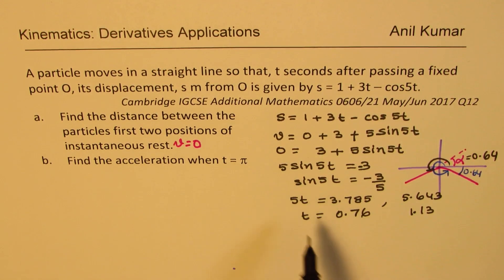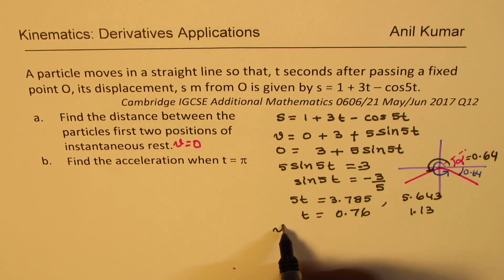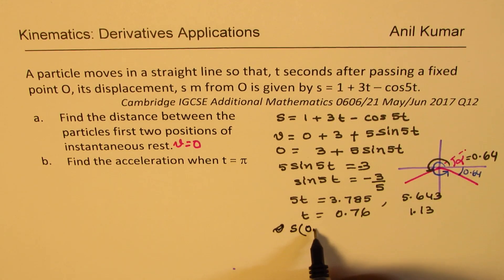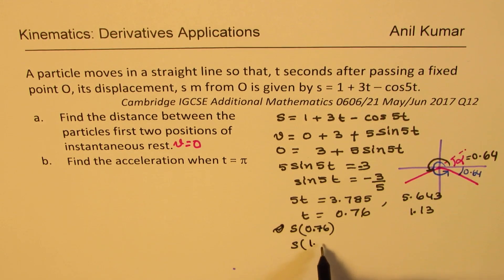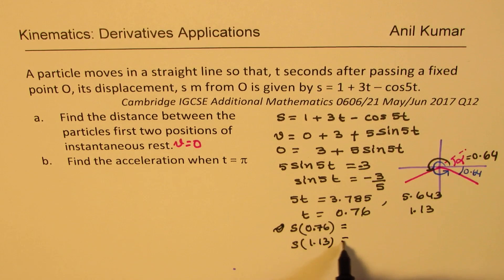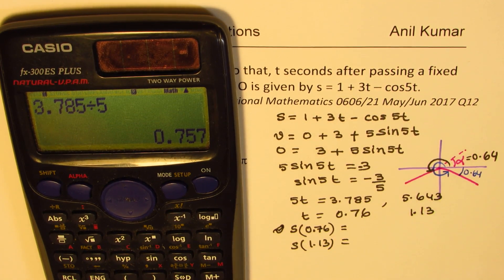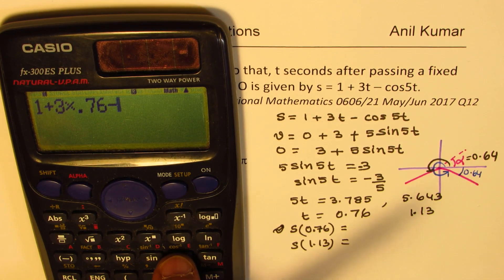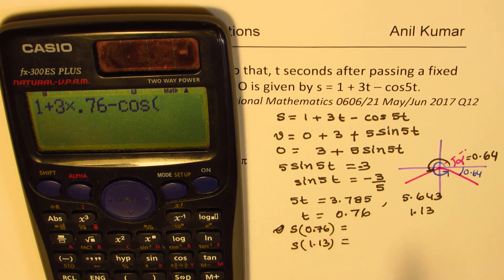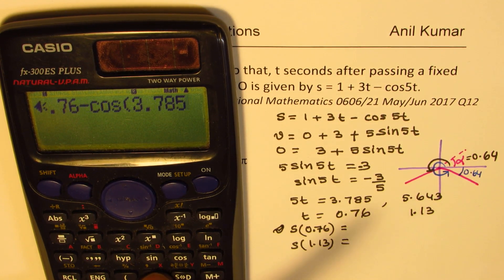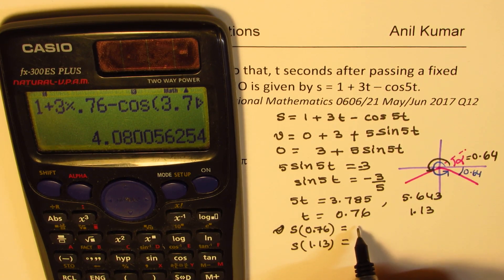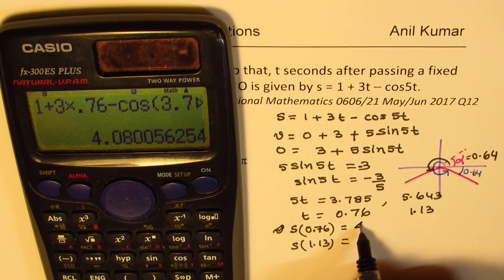Find the distance between them. So let's find the distance at time equals to, we'll just substitute in s. We'll find distance at 0.76 and we'll also find distance at 1.13. Now distances are given by this formula here. So we'll place the value there and calculate. We get 1 plus 3 times 0.76 minus cos of 5t. I can place this value 3.785, bracket close equals to. So that gives me a value of 4.08.